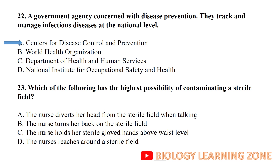Which of the following has the highest possibility of contaminating a sterile field? A nurse turns her back on the sterile field. When the nurse turns her back, she does not know what is on her back side, so turning her back on the sterile field has the highest possibility of contaminating it.